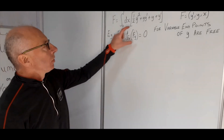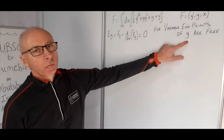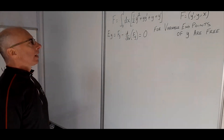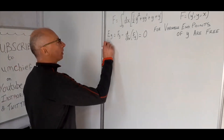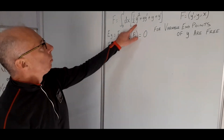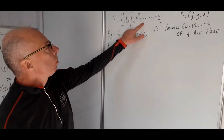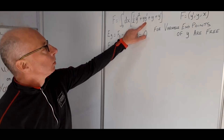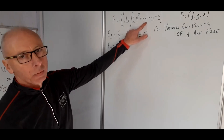When that partial derivative and the derivative of the whole thing is set to 0, that's what we're interested in to find these variable endpoints. So first, let's find the partial with regards to y. The y prime squared is not part of this, so that disappears. We've got a y and a y prime, so the y prime acts as a constant multiple, and if you take the derivative of this we're left with y prime.